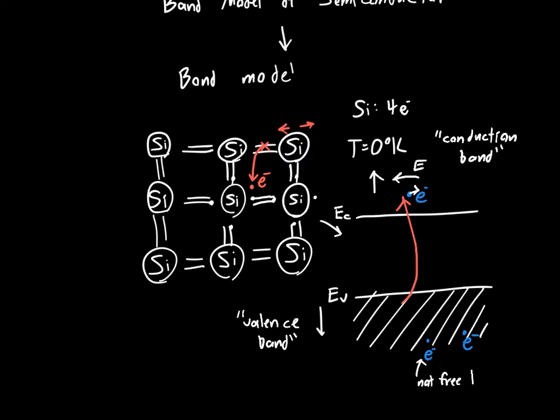And so we say that electrons in the valence band or electrons that are still bound to other atoms are not free to conduct electricity. They are not charge carriers. They do not contribute to the total amount of charge that's free to move around in the semiconductor.